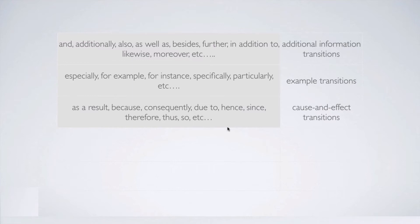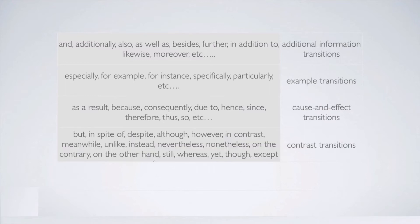That will be the cause and effect — the effect of the previous sentence. The next transitions are contrast transitions, and these are very popular ones. After one of these words there will be contrasting information. We need to look for some kind of contradiction and the best place for the sentence so that it contrasts the previous sentence. Such contrast transitions are: but, in spite of, despite, although, however, in contrast, meanwhile, unlike, instead, nonetheless, on the contrary, on the other hand, still, whereas, yet, though, except. You need to really know all these words — if you don't know some of them, please learn them. They all mean that after them there will be information contrasting what came before.